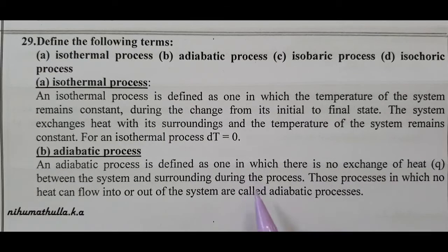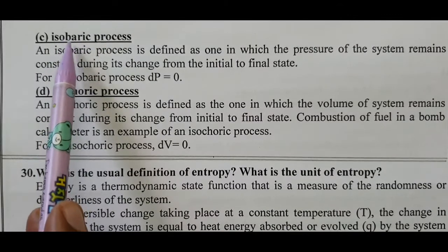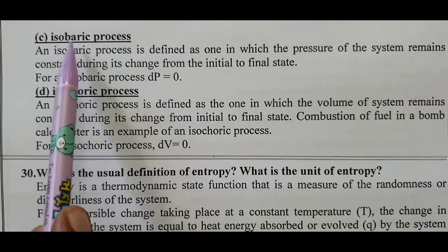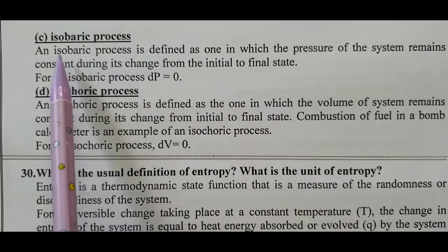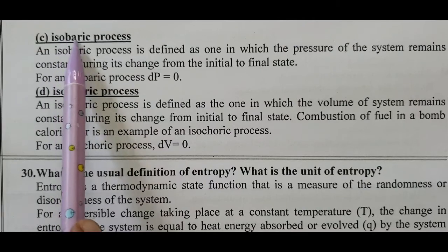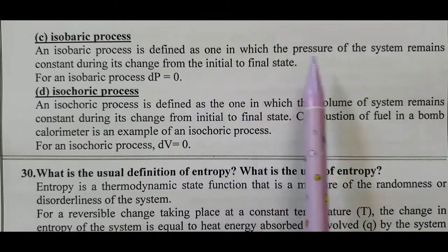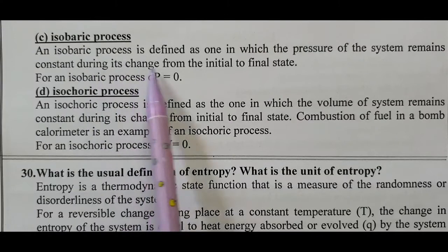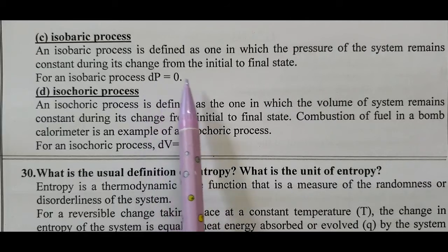Isobaric process: pressure is constant. 'Bar' is one unit of pressure, along with Pascal, Torr, millimeter of mercury, and atmospheric pressure. An isobaric process is defined as one in which the pressure of the system remains constant during its change from initial to final state. For an isobaric process, change in pressure equals zero.